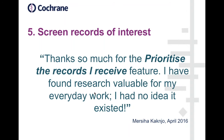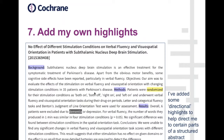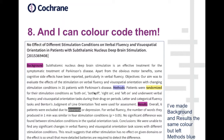The next feature is that you can add your own highlights. Here you can see I've added what I call directional or signposting highlights. In every record where the words 'background,' 'methods,' and 'results' appear, these words will be highlighted because I've selected that I want them highlighted. In Cochrane Crowd, you can also colour-code your highlights — so if I wanted 'methods' to be a different colour from 'background' and 'results,' I can make it a different colour.